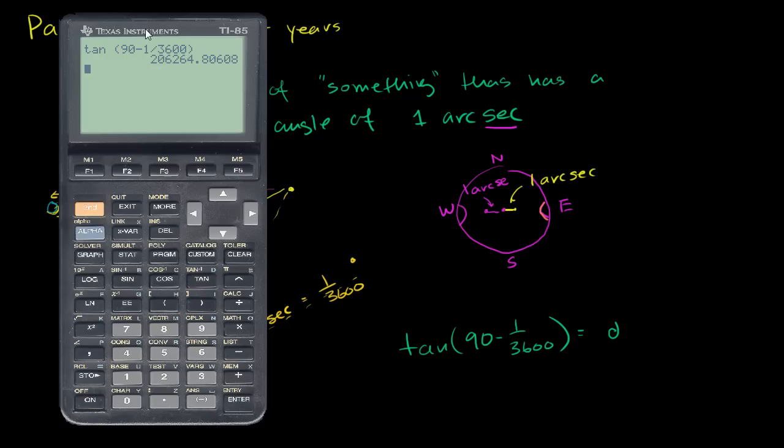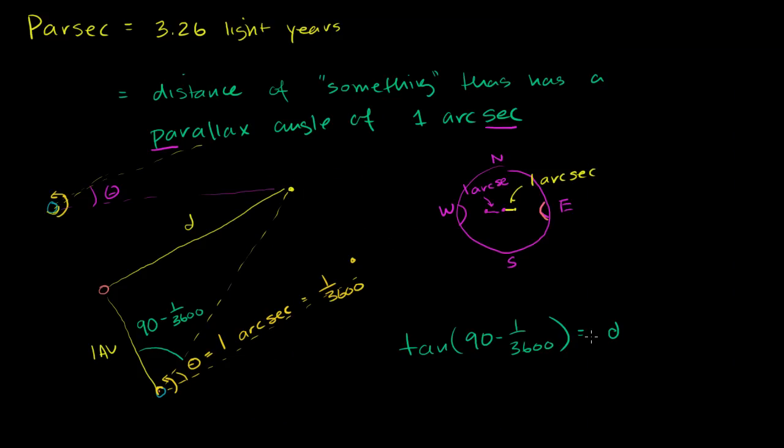206,264, maybe I say 265. So this is going to be equal to 206,265 astronomical units. And if we want to convert that into light years, we just divide.